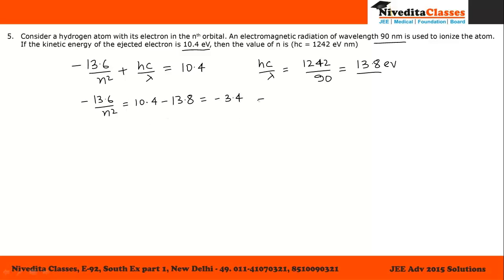Rearranging to find the value of n, we get n square equals 13.6 divided by 3.4, which cancels out to give 4. Taking the square root on both sides, we get n equals 2, which is our answer.